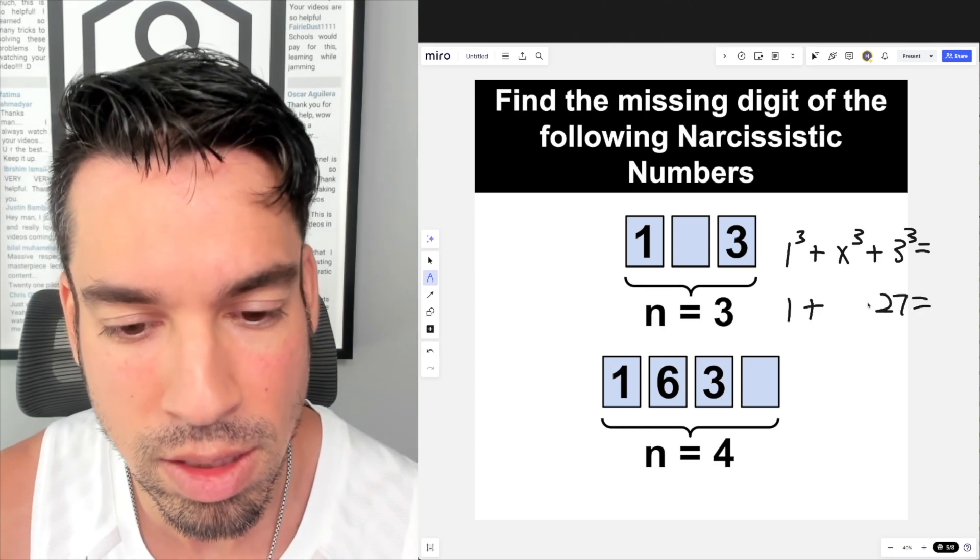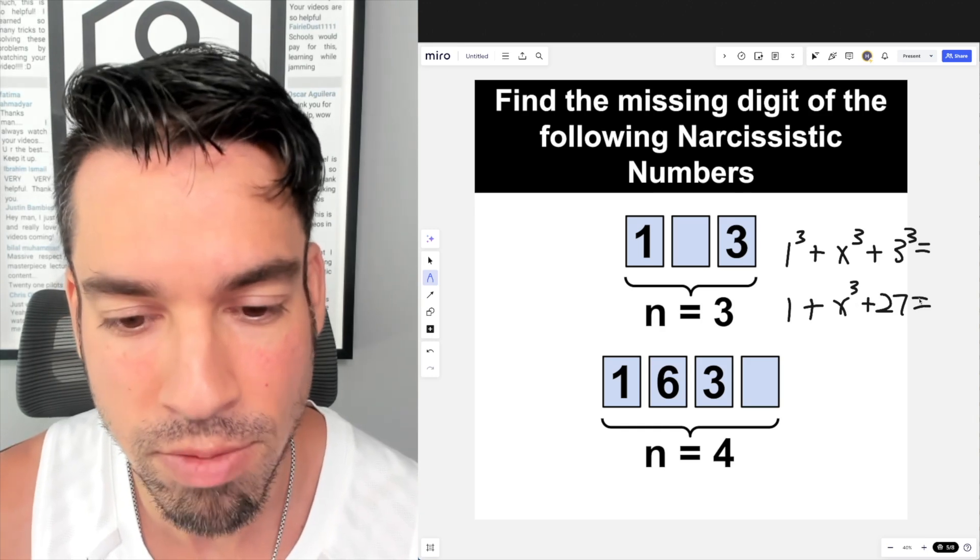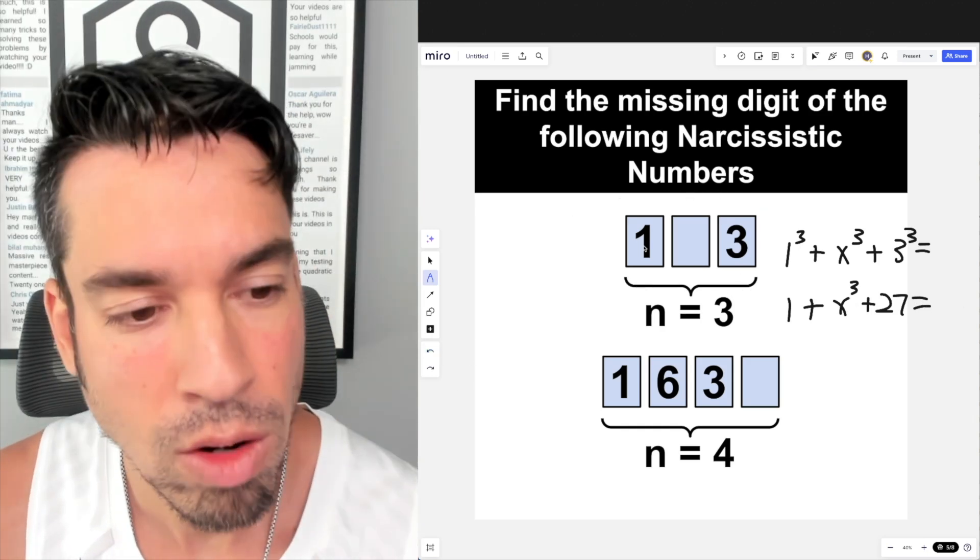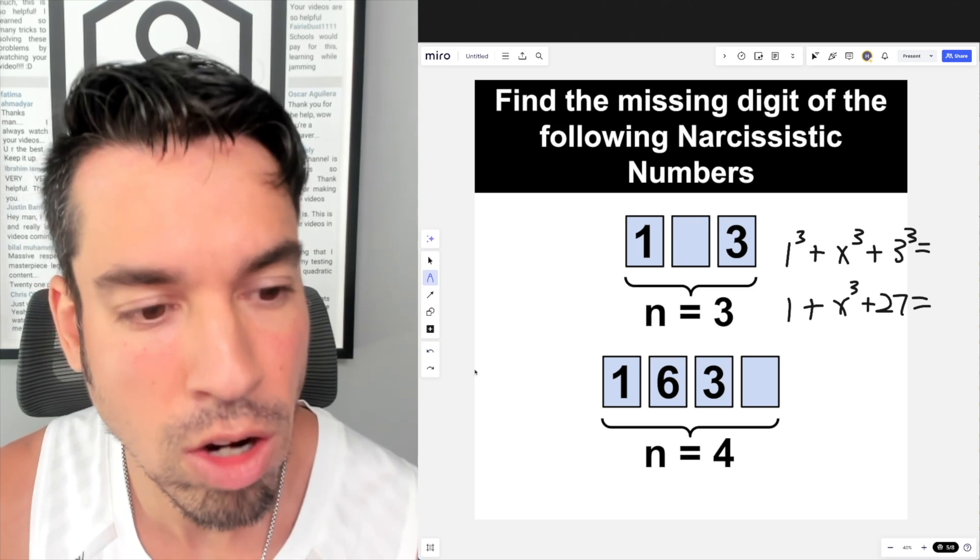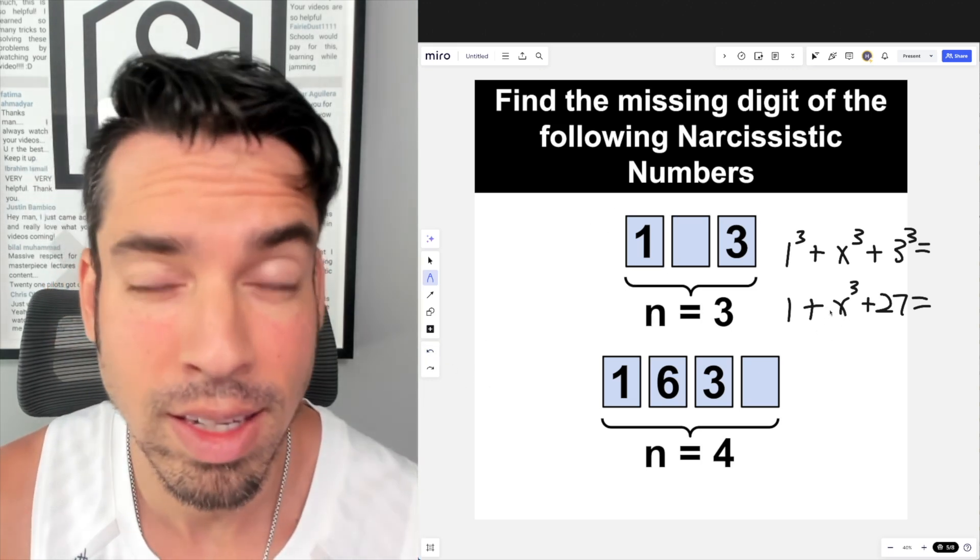What is 1³? One cubed is 1. And what is 3³? That is 27. So the question is, what value of x is going to give me a number that is going to be equal to the number itself? Now right off the bat we know that this is in the hundreds, and it's a hundred and something.